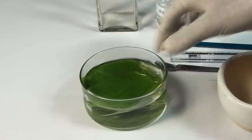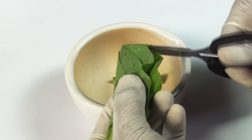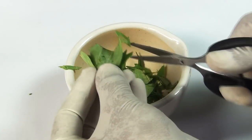Procedure: Take a few freshly plucked green spinach leaves. Using scissors, cut the spinach leaves into small pieces and let them fall into the mortar.